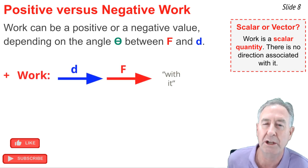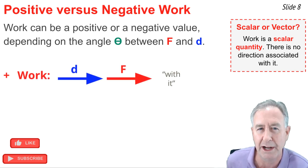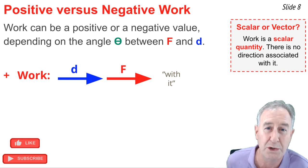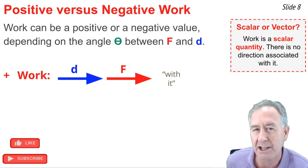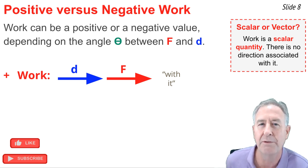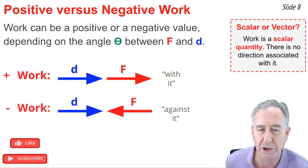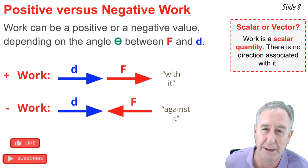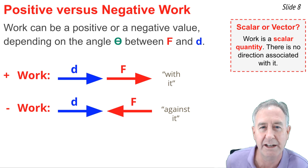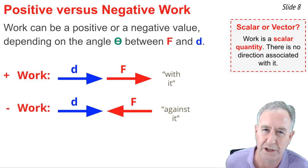When there is a component of force in the same direction as the displacement or the motion of the object, we say positive work is done on the object. The force is with the motion. If there is a component of force in the opposite direction as the object's motion, opposite to the displacement, then we say that the work is negative. The force is against the motion.